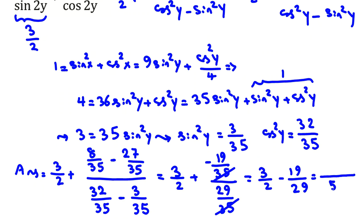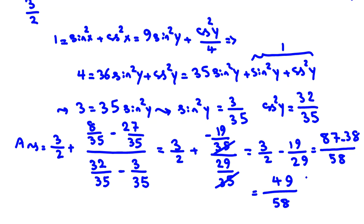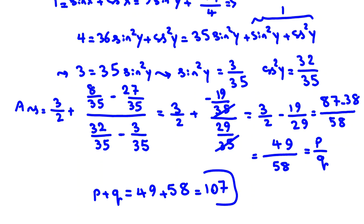So the full expression is 3 over 2 minus 19 over 29. Using common denominator 58: 3 times 29 is 87, minus 2 times 19 which is 38, giving 49 over 58. This is already in lowest terms. The problem asks for p plus q, which is 49 plus 58, equaling 107.